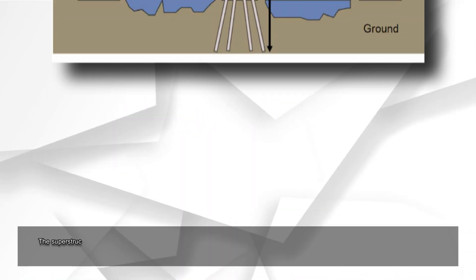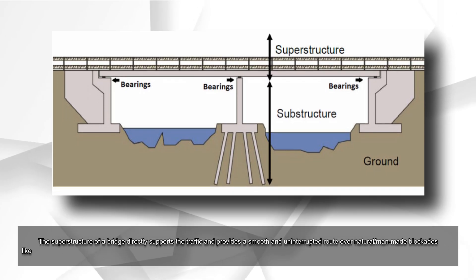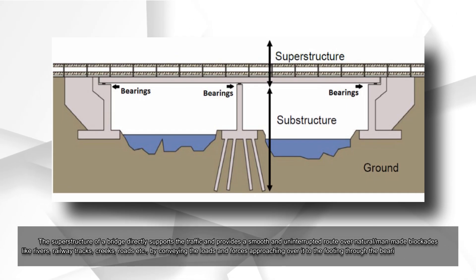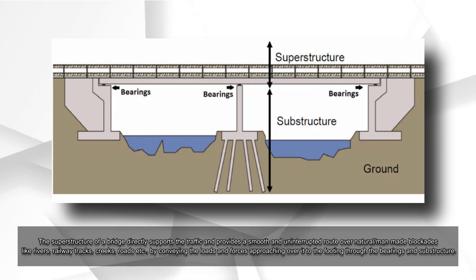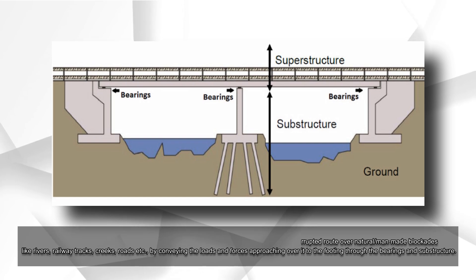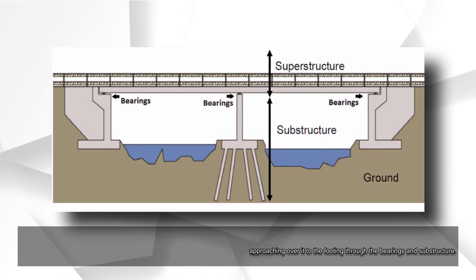Superstructure. The superstructure of a bridge directly supports the traffic and provides a smooth and uninterrupted route over natural or man-made blockades like rivers, railway tracks, creeks, roads, etc., by conveying the loads and forces approaching over it to the footing through the bearings and substructure.